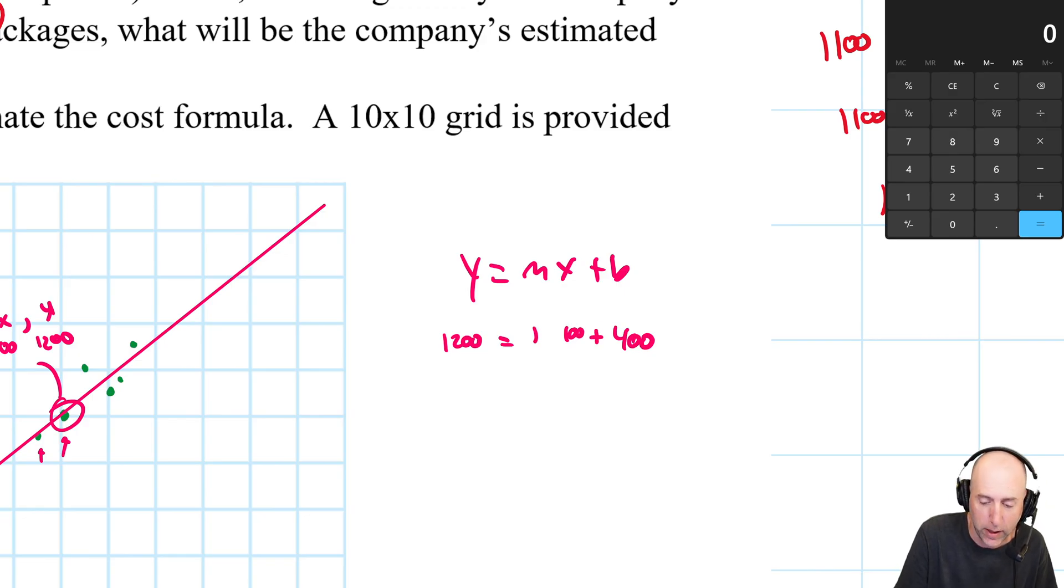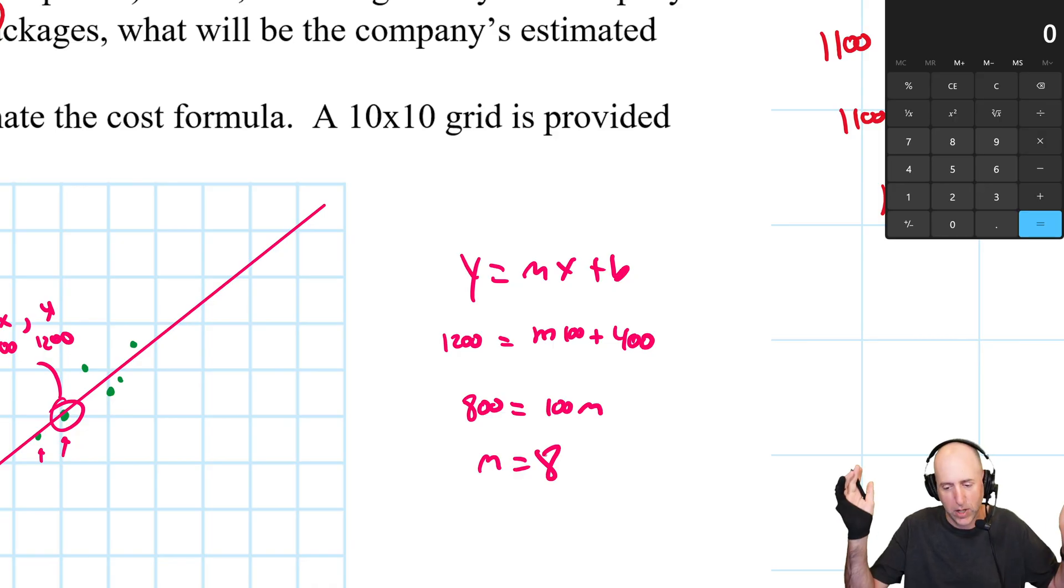So I plug that in here. I go okay, my y is 1200, my x is 100, and now I solve for m. M is unknown. So I got the intercept is 400. I got the fixed cost is 400. I got my y and my x. Now I just have to solve for m. So okay, let's take away 400 from both sides. I have 800 equals 100m, m equals 8.